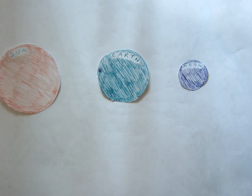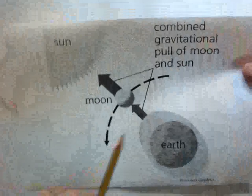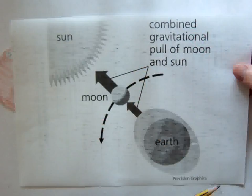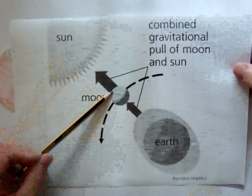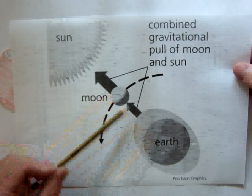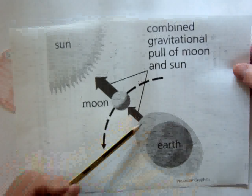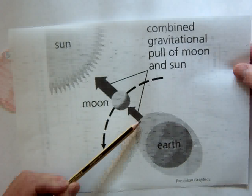Spring tides are approximately 20% higher than a normal high tide. A spring tide occurs when you have the combined gravitational pull of the moon and the sun. In this diagram here we have the sun and the moon in conjunction with the earth, and you can see that the combined gravitational pull of the sun and the moon is creating a higher high tide.